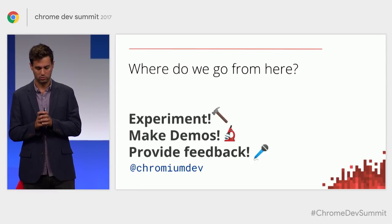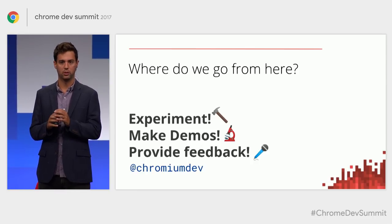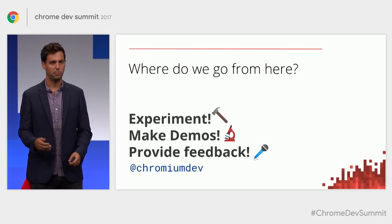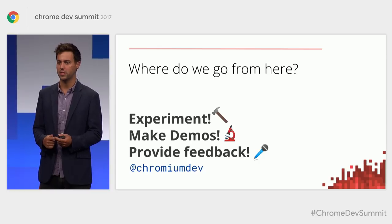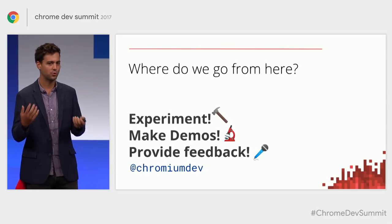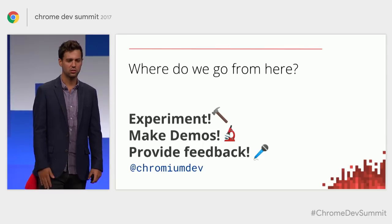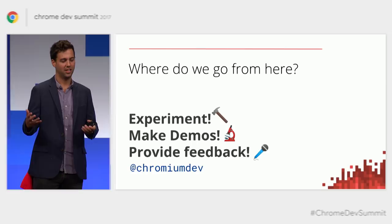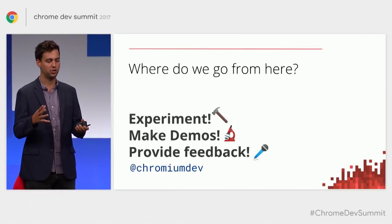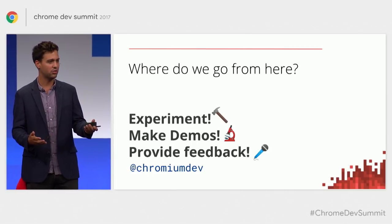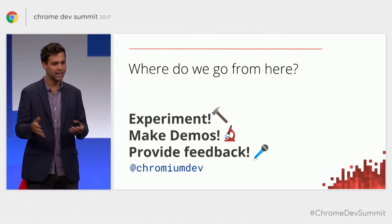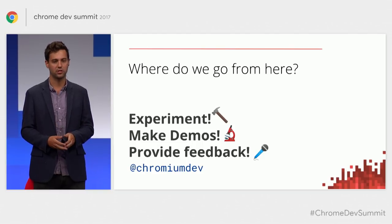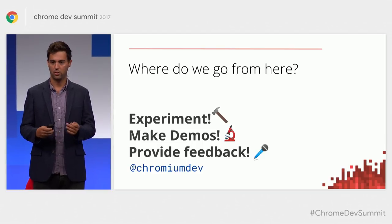So where do we go from here? I encourage you to take a look at these APIs we've talked about today and experiment. Push the limits, see what breaks, see what's missing. Share your demos, tweet at us, post bugs, and in general provide feedback. With your feedback and the things we're pushing on, we'll be able to push overall web performance for end users to be a fast experience, regardless of what device you're on or what network conditions your user finds themselves on. Thank you very much.